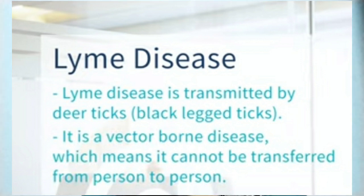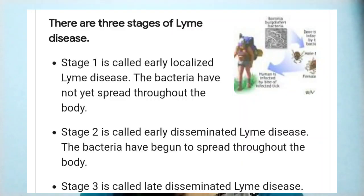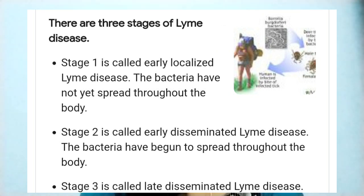There are three stages of Lyme disease: stage 1, stage 2, and stage 3. Stage 1 is the initial phase, meaning the bacteria does not spread throughout the body, so the symptoms are not too much. Stage 2 is called early disseminated Lyme disease — the bacteria have begun to spread throughout the body. The third stage is called disseminated Lyme disease.